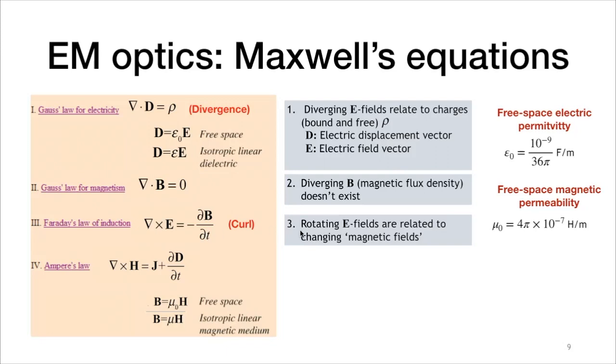is equal to minus variation of B with time. In other words, rotating electric fields, which means varying in space, are related to changing magnetic fields in time.